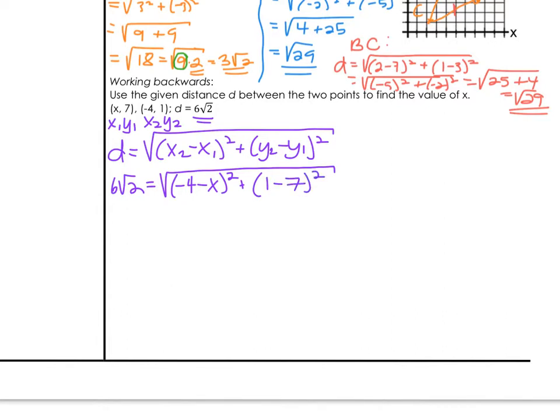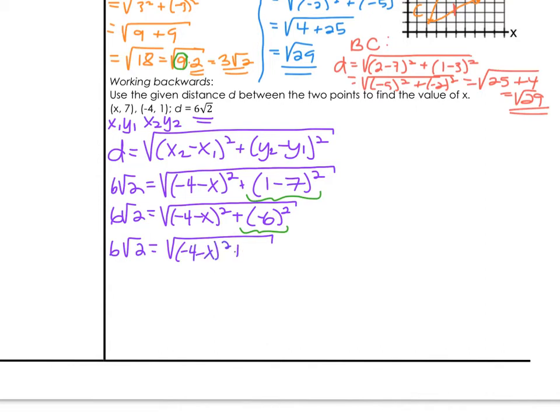Really, the only thing at this point we can simplify is we can take that 1 minus 7 and clean it up a little bit. We'll keep the 6 square root 2. We'll keep the big square root for now. -4 minus x, we're not going to do anything with. But 1 minus 7 is -6. Still, you can go one step further. If we square negative 6, we would get positive 36. So we're going to leave the parenthesis with x in it, but we simplify the other one.